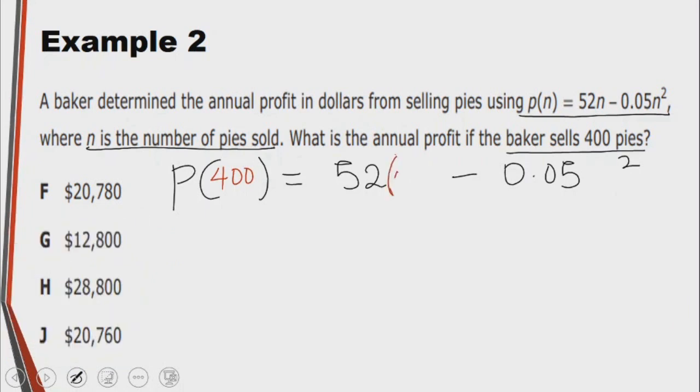52 multiplied by 400 minus 0.05 times 400 squared. I'm using parentheses, as you can see, so that I won't make any mistake. So this will become 52 multiplied by 400 would be 20,800.